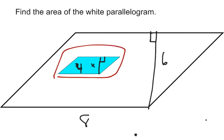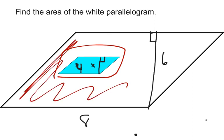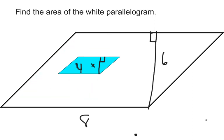So what we need to do is find the area of all of the white colors. Well, how do we do that? We need to find the area of the outside piece, and we need to subtract this area in the middle.